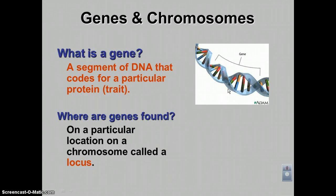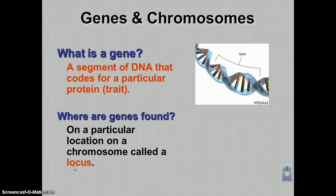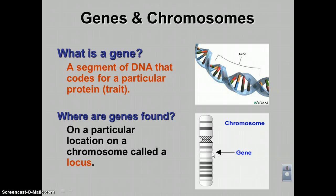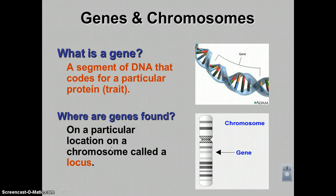Genes are found on a particular location on a chromosome, and this is called a locus. LOC and LOC share the same root word, and it simply means location. As we can see here, this is a typical chromosome. This little pinched-in area right here would be the centromere region. These little dashes on here are particular places where some genes would be. This gene right here — its location is this gray band — so gene A's locus is this particular spot right here.